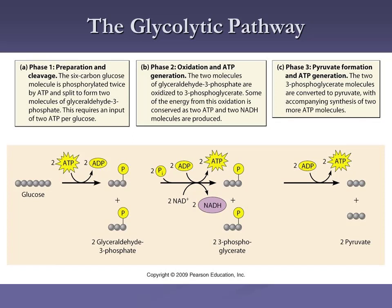Phase two is the oxidation step. As we process our glyceraldehyde-3-phosphate — there are two of them — we take electrons and hydrogens out and oxidize two NADH molecules. So there's our oxidation and production of two NADH. We're putting in phosphate groups, but we're also taking two out and producing two ATP. After oxidation and ATP generation, we produce two NADH and two ATP, and we have 3-phosphoglycerate as our intermediates.